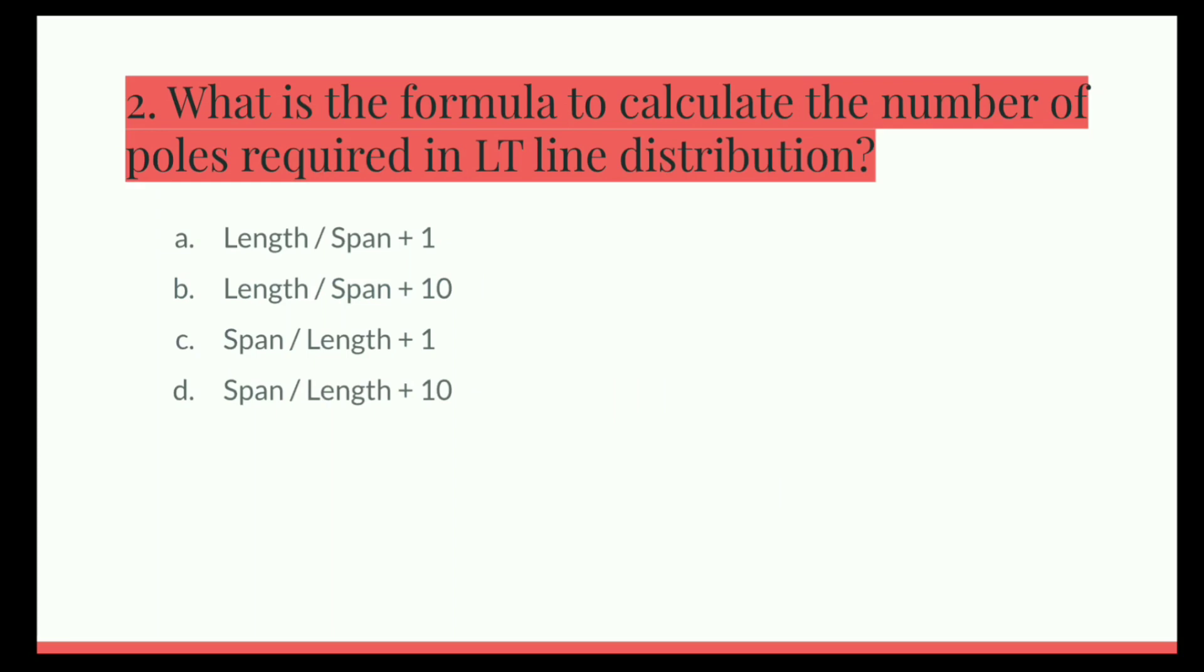Next question. What is the formula to calculate the number of poles required in LT line distribution? Option A, Length per Span plus 1. B, Length per Span plus 10. C, Span per Length plus 1. D, Span per Length plus 10. And the correct answer is Length per Span plus 1.